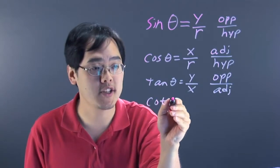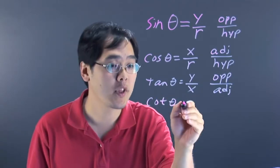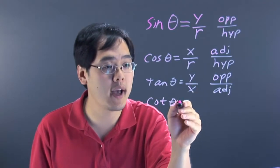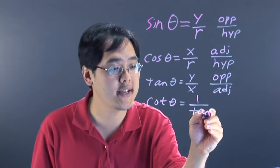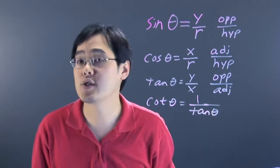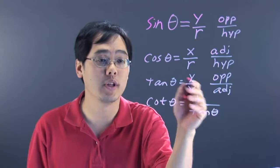You have the cotangent function, C-O-T. You can think of this as x over y, or adjacent over hypotenuse, but either way, think of the cotangent as 1 over tangent. That's right, cotangent is actually the reciprocal of tangent.